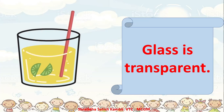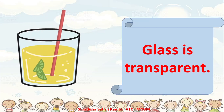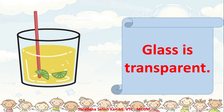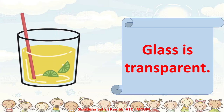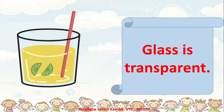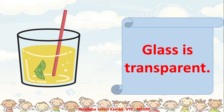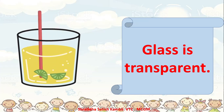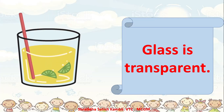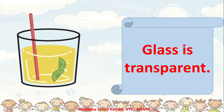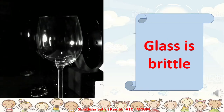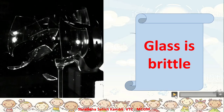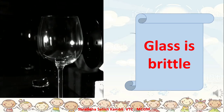Glass is transparent. Transparent means it allows light to pass through it. And because light passes through it, we can also see through it. This is the next property of glass. Glass is transparent. In the previous image, we saw that glass was brittle and we also heard the sound of glass breaking.